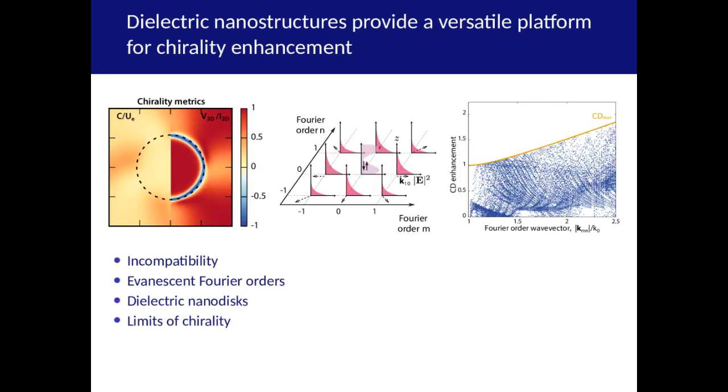And with that, we come to the end of my talk. The main things I would like you to take away are the incompatibility of the different metrics of chirality in the near field, the utility of Fourier decomposition in understanding and designing chiral near fields, the versatility of dielectric structures for chiral optical applications, and that CD enhancement can be maximized up to an analytic limit in highly evanescent Fourier orders. We hope that our work will guide the design of better metasurfaces for chiral optical applications.